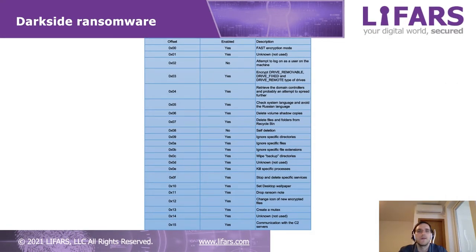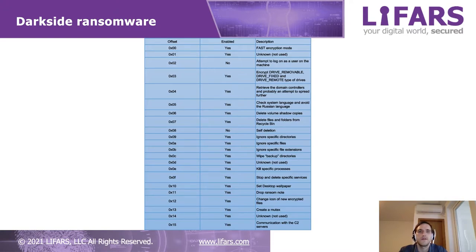This table contains a list of actions that can be performed by the ransomware. For example, it can delete volume shadow copies, ignore specific directories, files and file extensions, kill some processes, and so on and so forth.